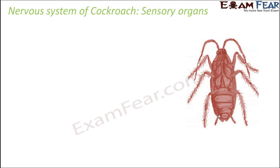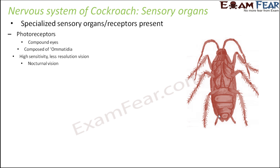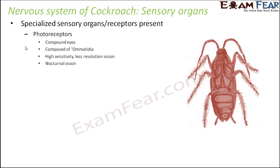Let us talk about the sensory organs. When discussing the nervous system, it is important to mention sensory organs because they can feel external stimuli. Specialized sensory organs or receptors are well present. Photoreceptors — organs which can feel the presence of light — are the compound eyes. This pair of compound eyes is composed of ommatidia, which are the photoreceptor units. They have high sensitivity but less resolution vision, and they have nocturnal vision — that is, they can see at night.